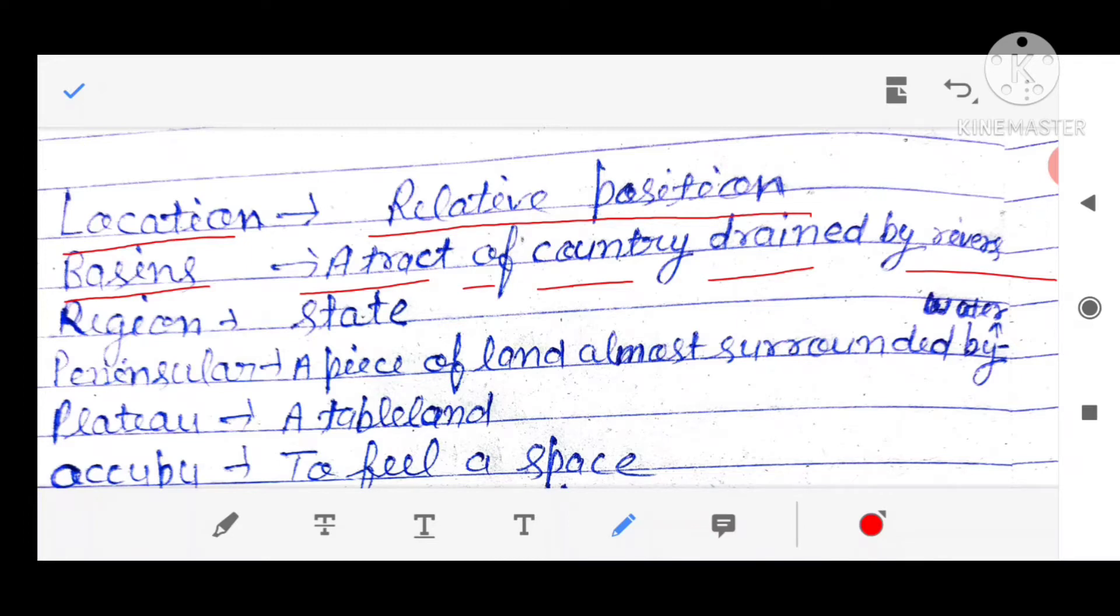Region, R-E-G-I-O-N. Region means state. Peninsular, P-E-N-I-N-S-U-L-A-R, peninsular. A piece of land almost surrounded by water.